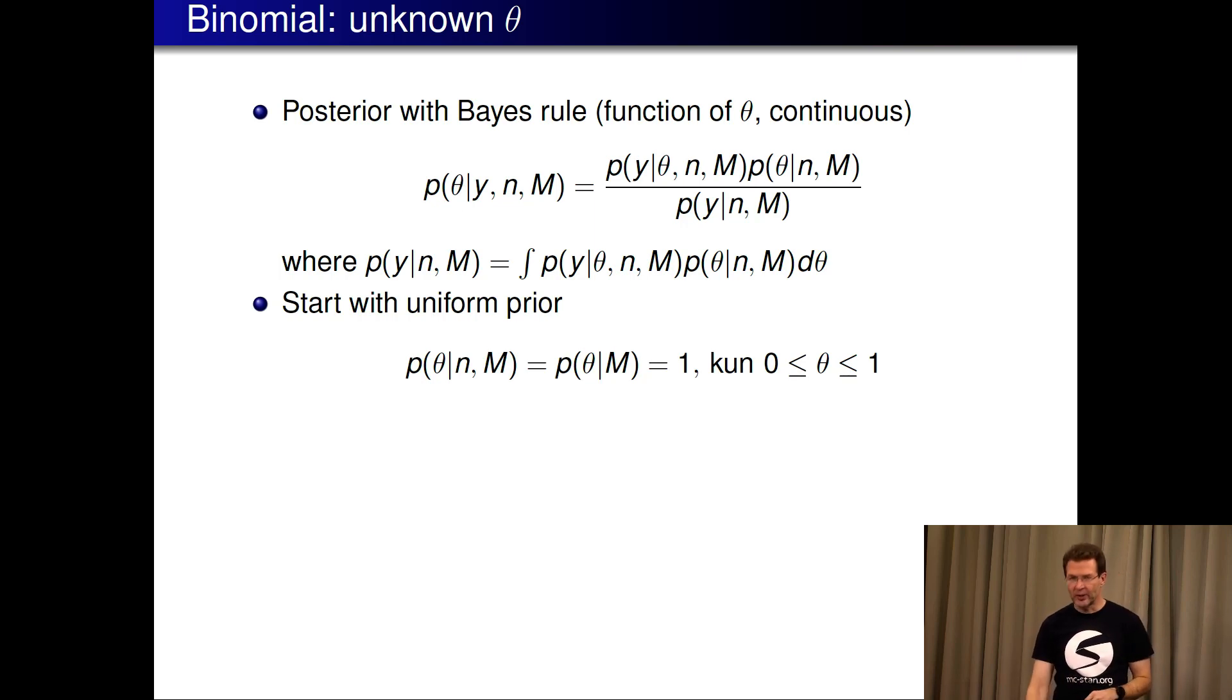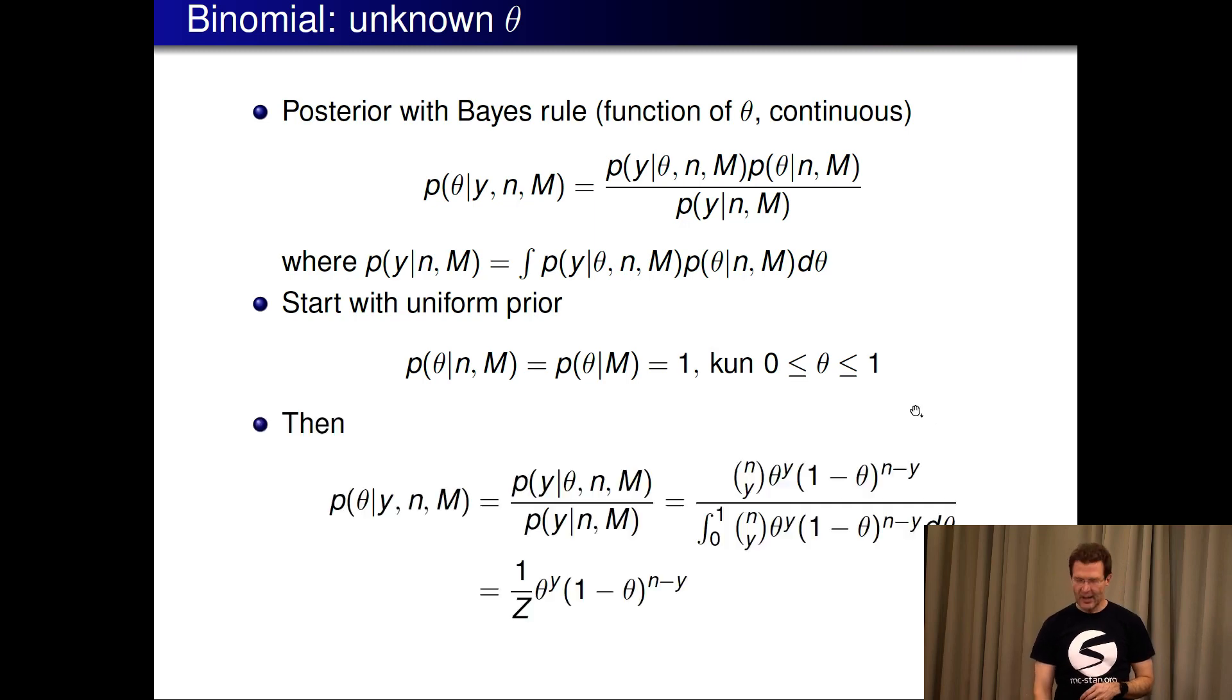Now for simplification we start using uniform prior. I'll come back later to priors. But now we just said this is uniform and the theta is constrained to be between zero and one as it's this probability. And then the prior drops.